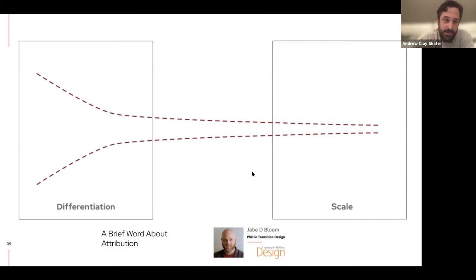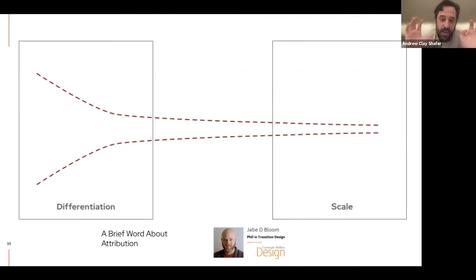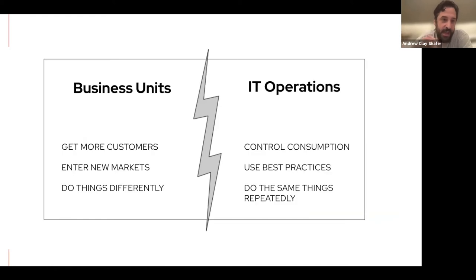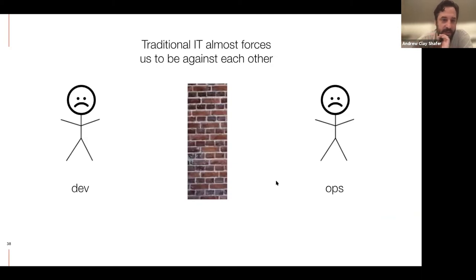This is from my colleague Jay, a PhD at Carnegie Mellon focused on how organizations change their behavior to take advantage of technology. What he talks about is three economies. The first two are what he calls the differentiation economy and the scale economy. One side is trying to create more value, one side is trying to drive down costs — or one side is trying to destabilize, the other is trying to stabilize. You see this tension play out between business units and IT operations all the time, and those two games kind of force us to be against each other.